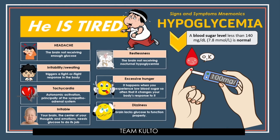D is for Dizziness. A person with diabetes can develop hypoglycemia from decreased food intake or from taking too much medication — insulin or oral tablets. Because insulin lowers blood sugar, taking too much can cause hypoglycemia. This results in low blood sugar levels, and the person experiences dizziness or lightheadedness because the brain lacks glucose to function properly. The key takeaway: sugar plays a big role in maintaining the function of our nervous system and brain — our body's main energy source.